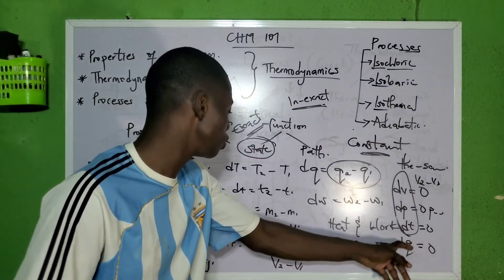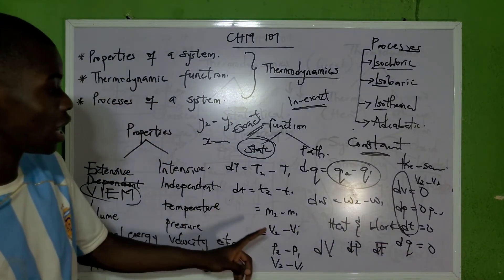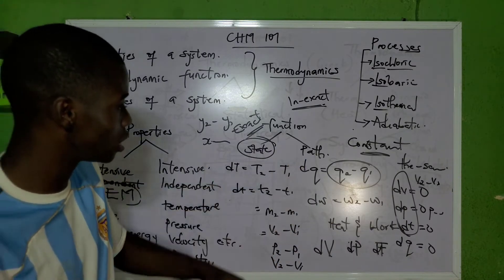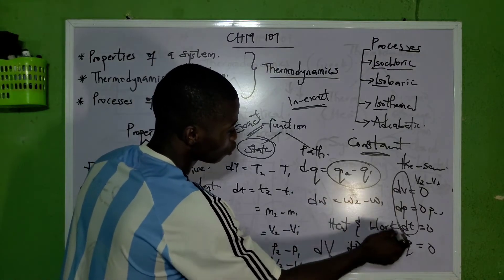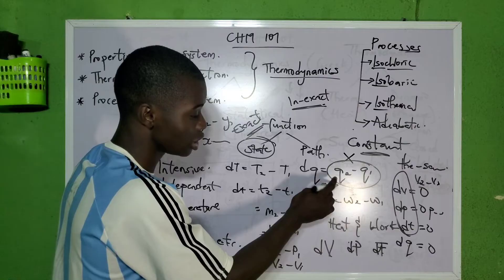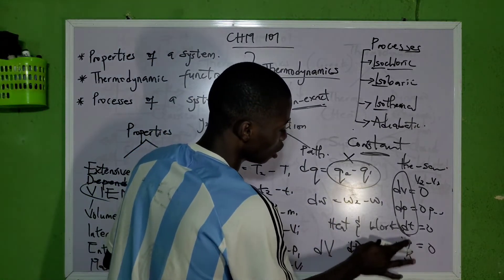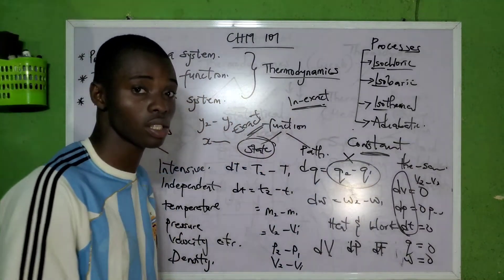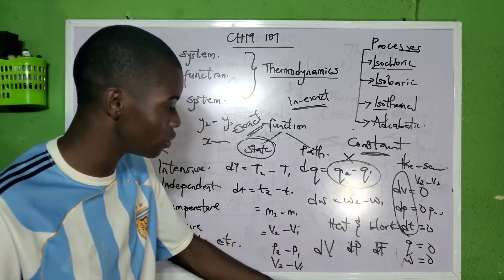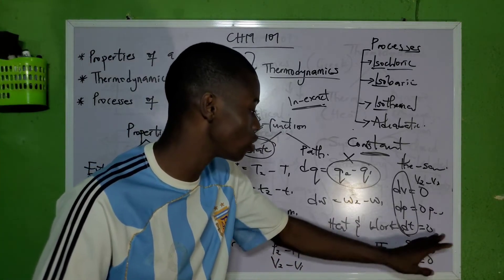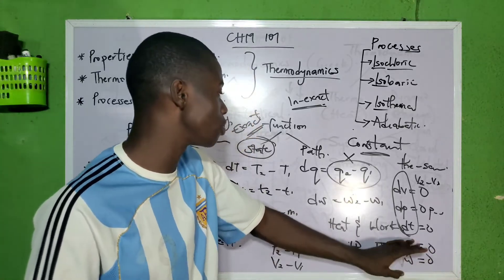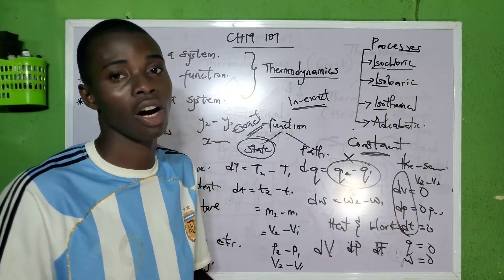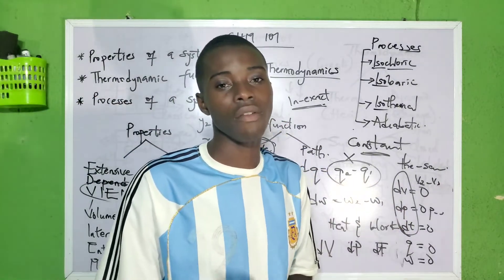Why do we write q = 0 and not dq = 0 for an adiabatic process? Because V, P, and T are state functions — they have initial and final values. But q (heat) is a path function, so you cannot write dq in the same way. Since heat is a path function, we simply write q = 0. Similarly, work w would also be w = 0, not dw. The differential of a state function is exact, while that of a path function is inexact.